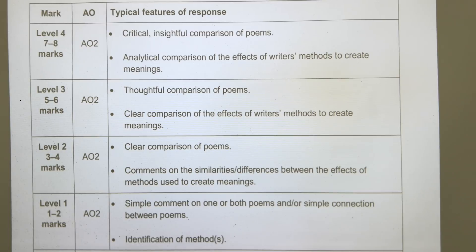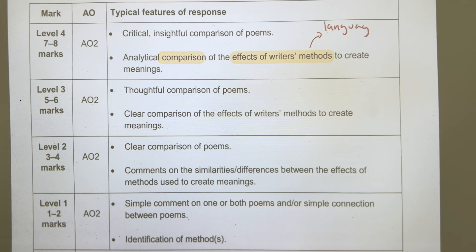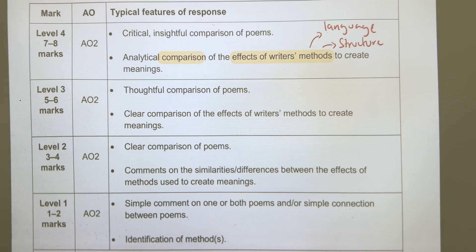All of us are aiming for seven to eight out of eight. To achieve the top band, we have to compare the effect of writer's methods — specifically language and structure. The only difference between this and the lower bands is the quality of the comparison. The words used in the top band are critical, insightful, and analytical, whereas lower bands say simple, clear, and thoughtful.